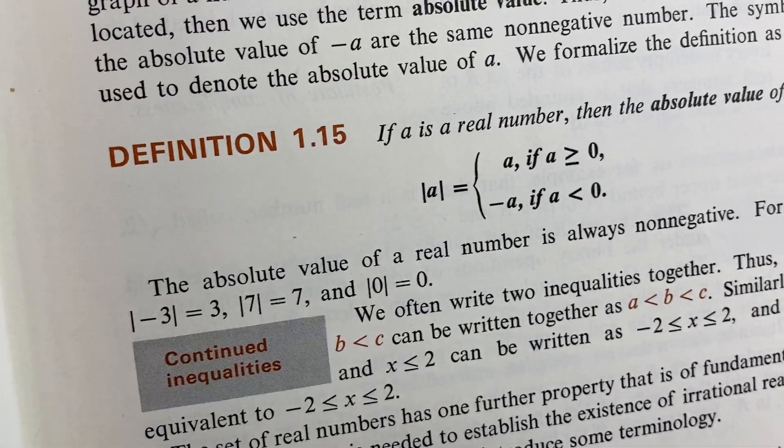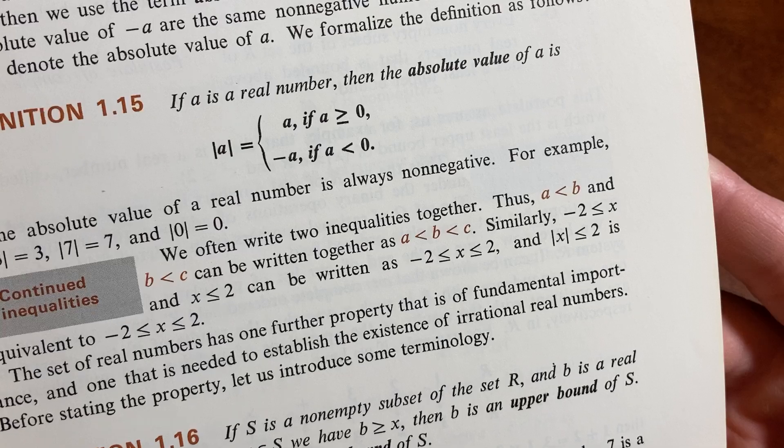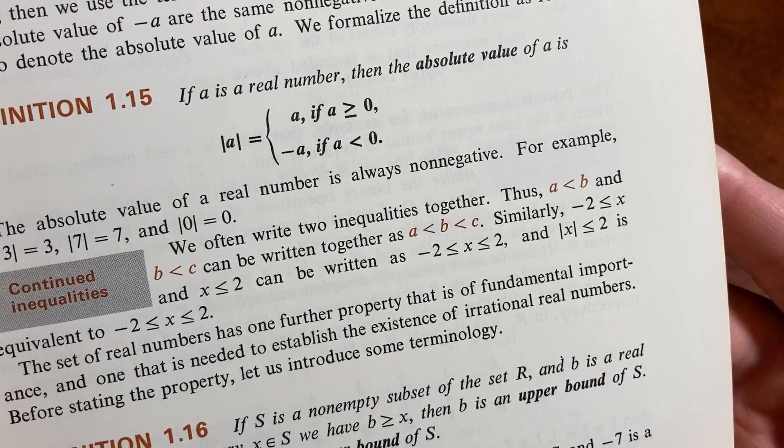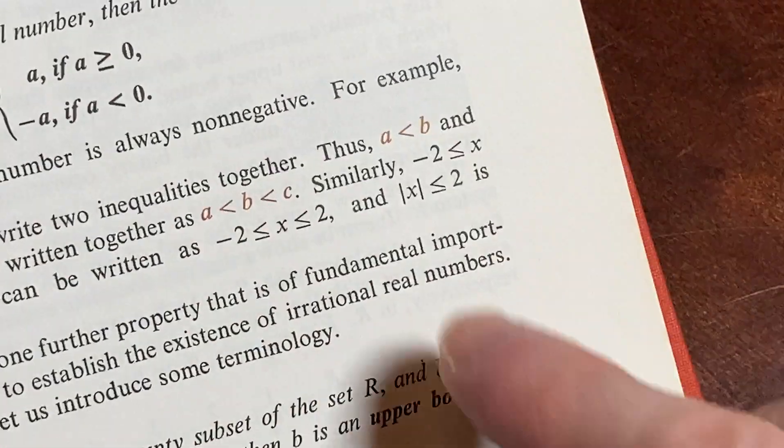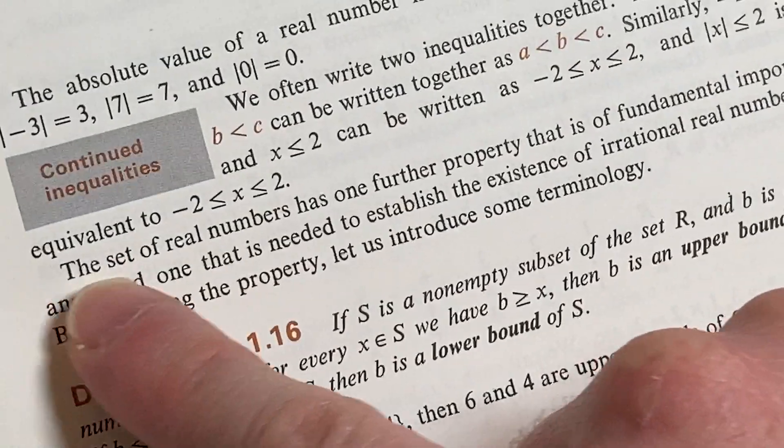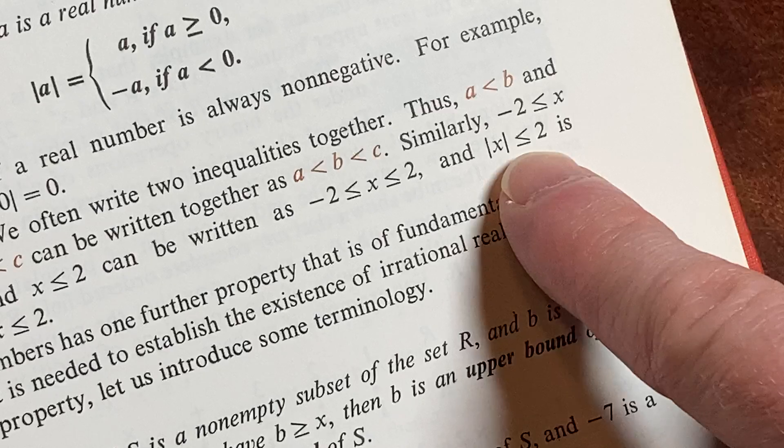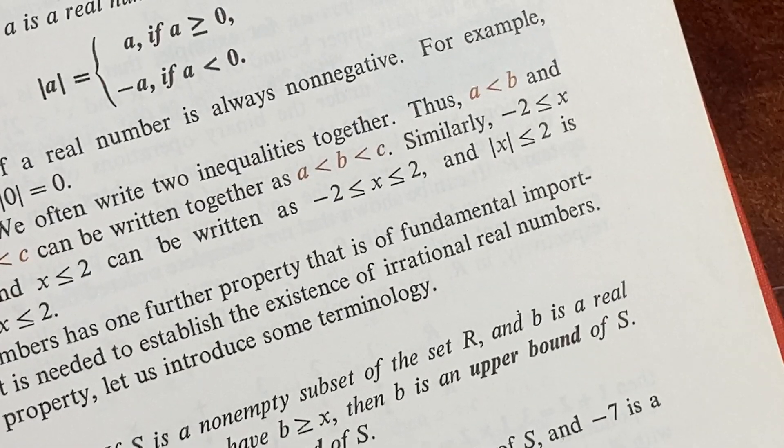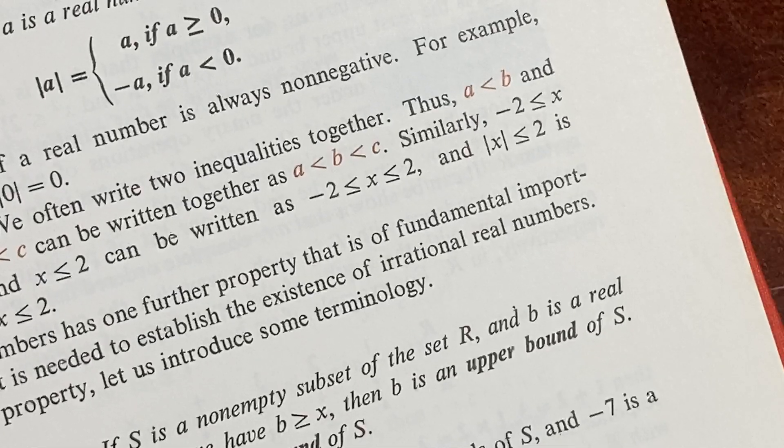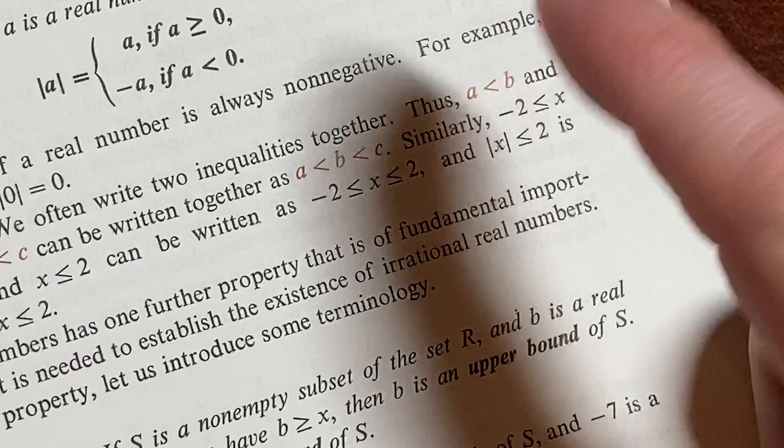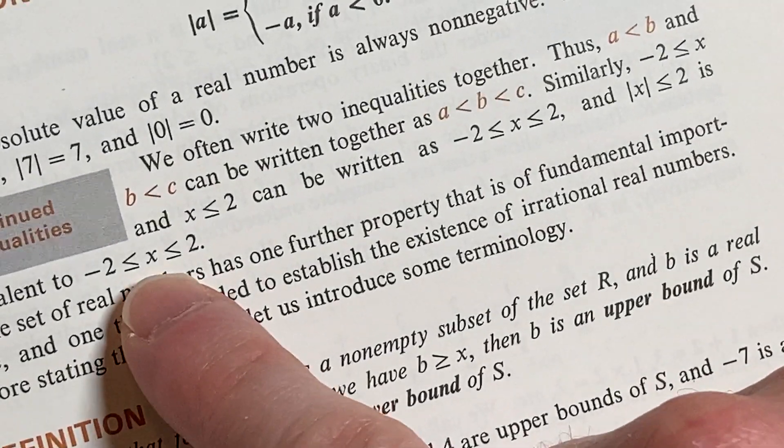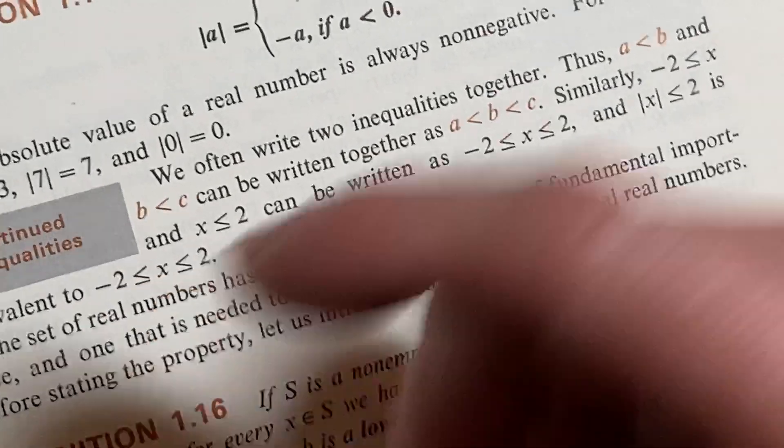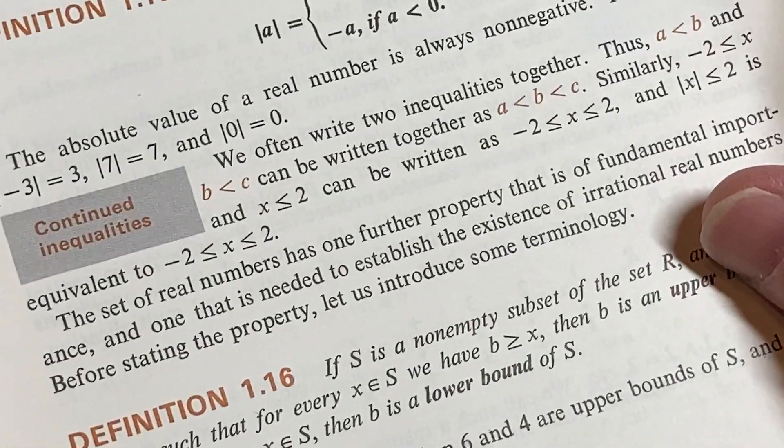It says, we often write two inequalities together. Thus, a less than b and b less than c can be written together. Because to say that the absolute value of x is less than or equal to two is equivalent to this. And the reason is, if the absolute value of x is less than or equal to two, the distance between x and zero is less than or equal to two. So, x is going to be less than two, but it's also going to be bigger than negative two. But you have to allow for equality. So you get x between negative two and two, inclusive. That's what this is right here. When you see that, that's what that means. x is between these numbers and you're including those endpoints. It would be the closed interval from negative two to two with brackets.